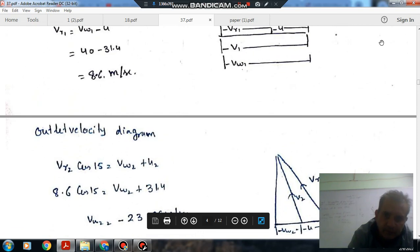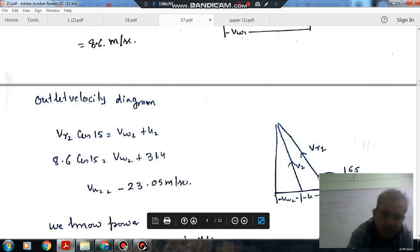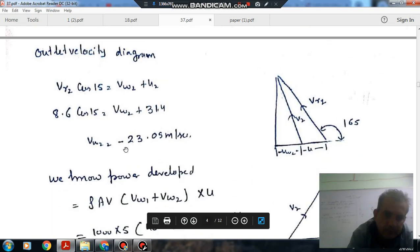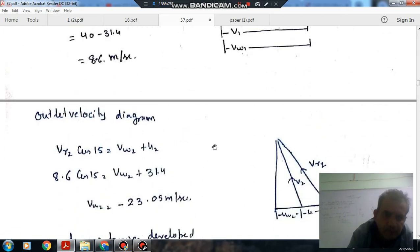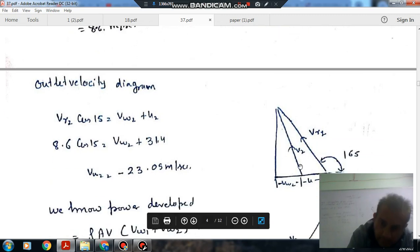Relative velocity at inlet will equal relative velocity at outlet. This is the outlet velocity diagram. The jet is deflected by 165 degrees. So Vr2 cos 15° = Vw2 + U. From this, Vw2 = -23.09 m/s. As it is minus, the actual diagram will be like that.